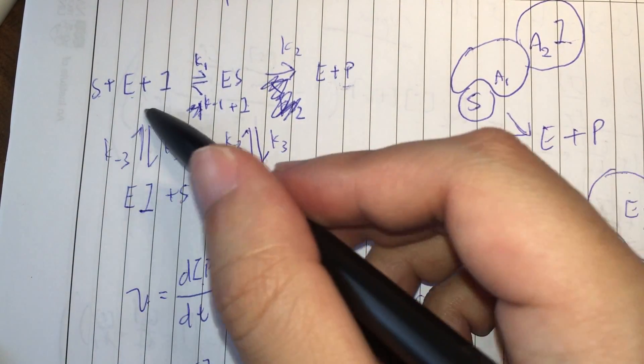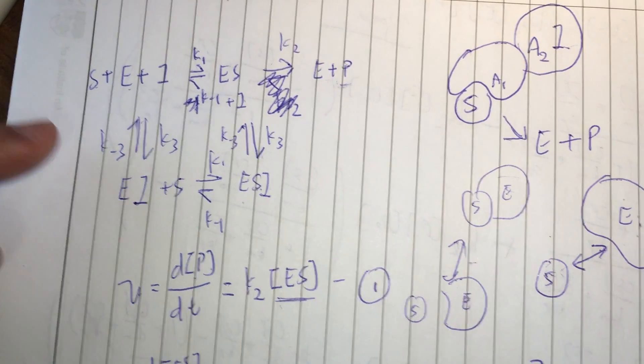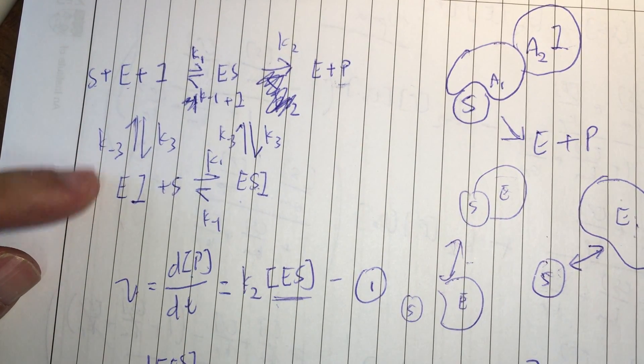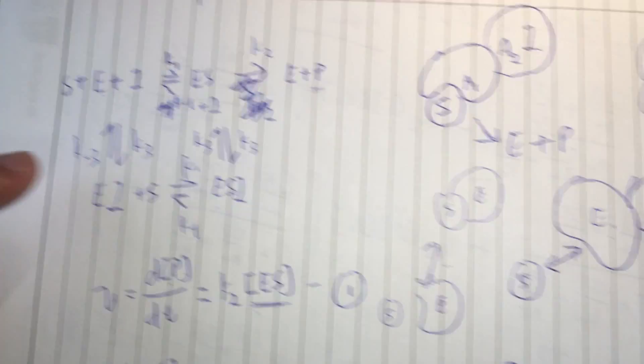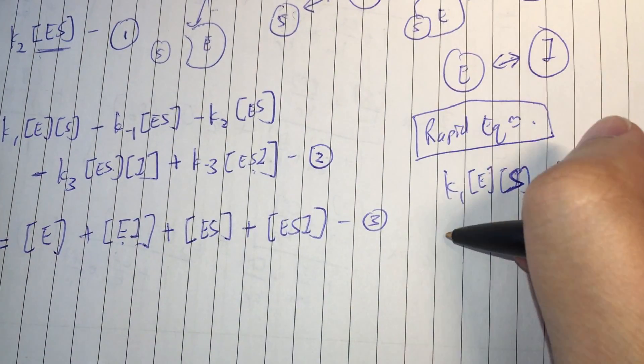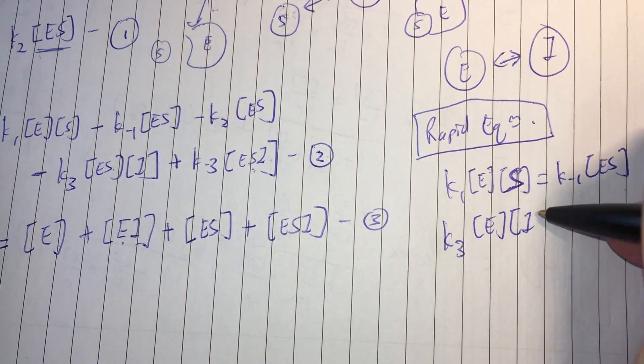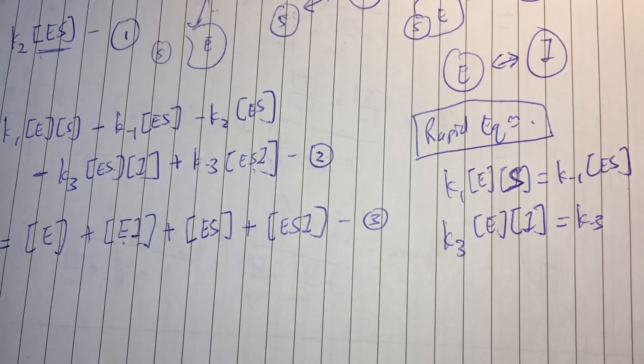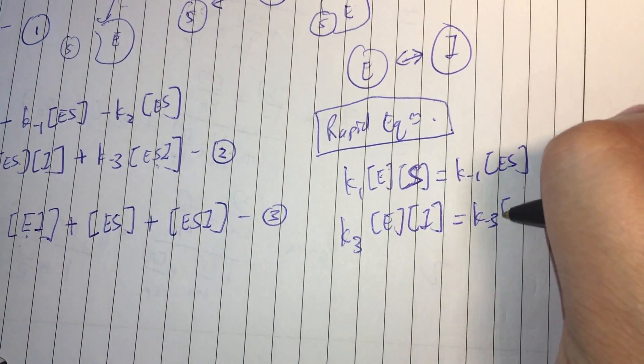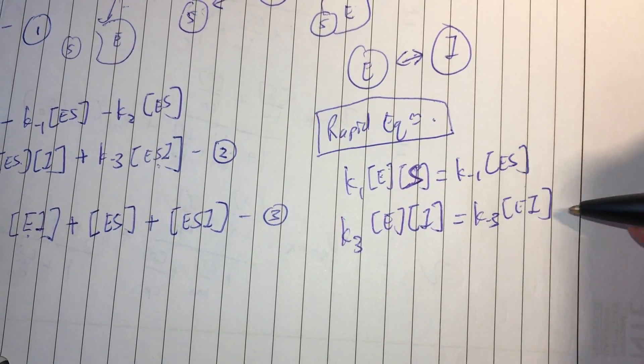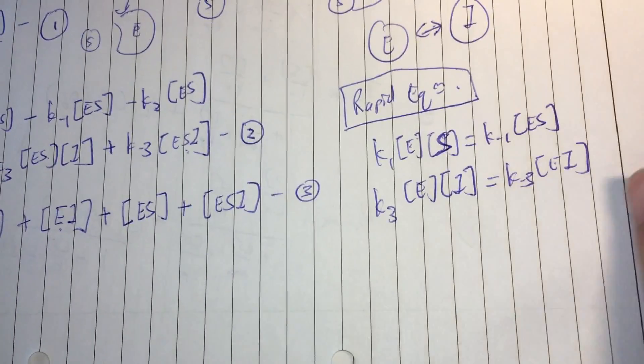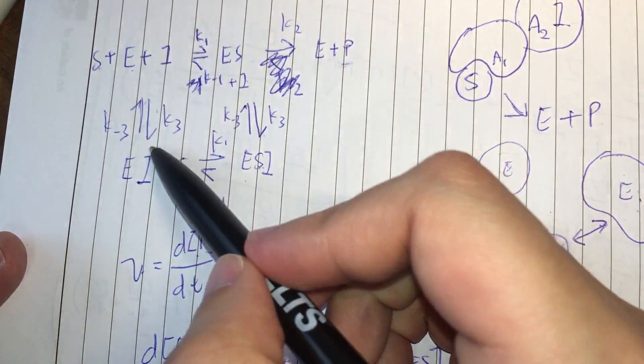Now, let's talk about the second one. EI into E plus I into EI. So, that's K3 E into I is equal to the backward rate K minus 3 into EI. So, that's the second one.